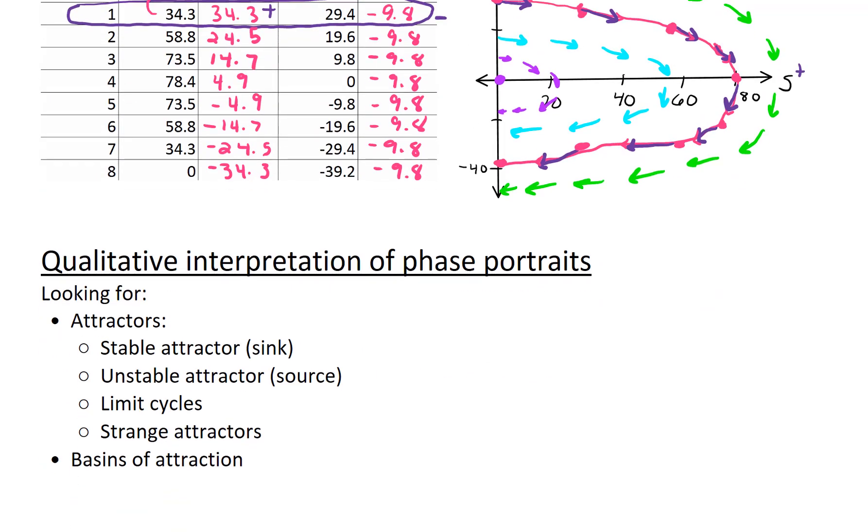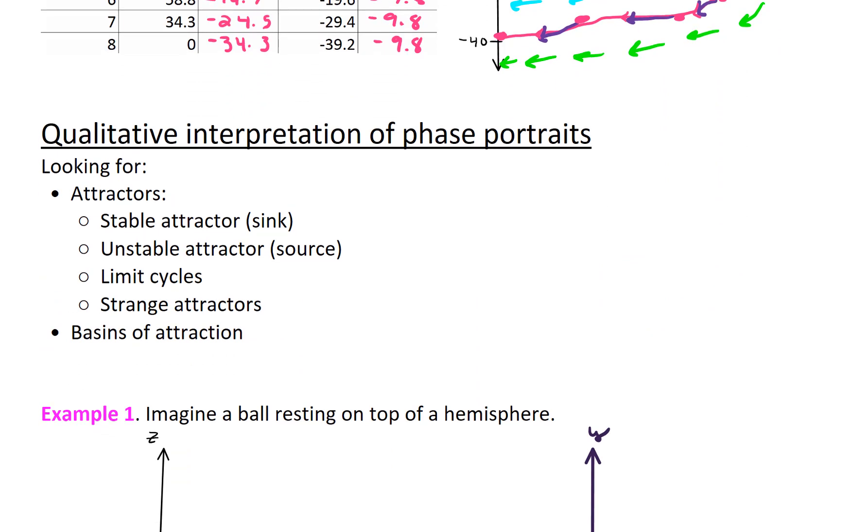Okay, so let's talk about qualitative interpretation of phase portraits. The sorts of things we're going to be looking for are attractors. And those attractors can come in a couple of different flavors. They can be stable attractors like a sink or an unstable attractor like a source. We also might find limit cycles, strange attractors like we saw in the chaos video. And we also want to be looking for basins of attraction.